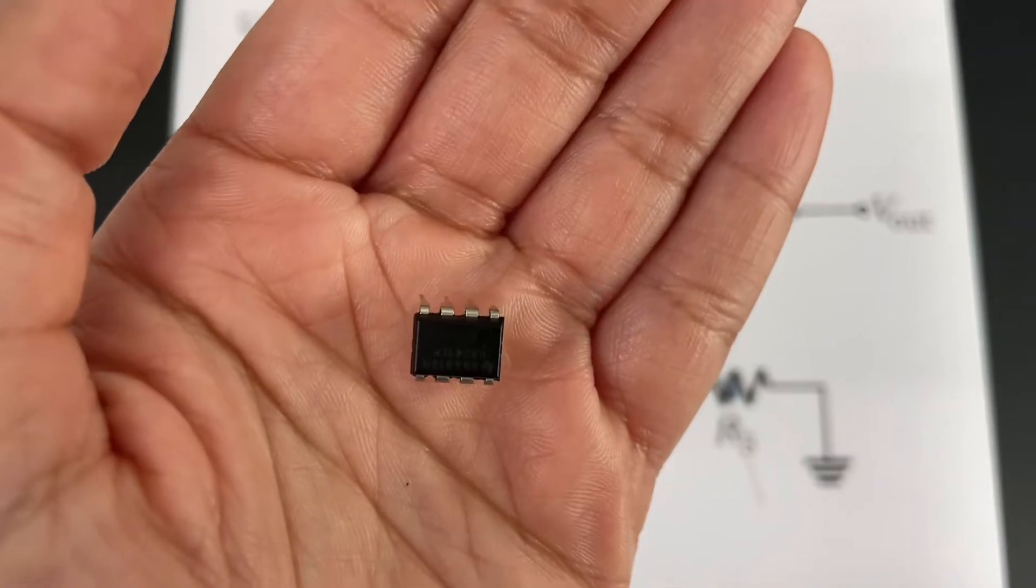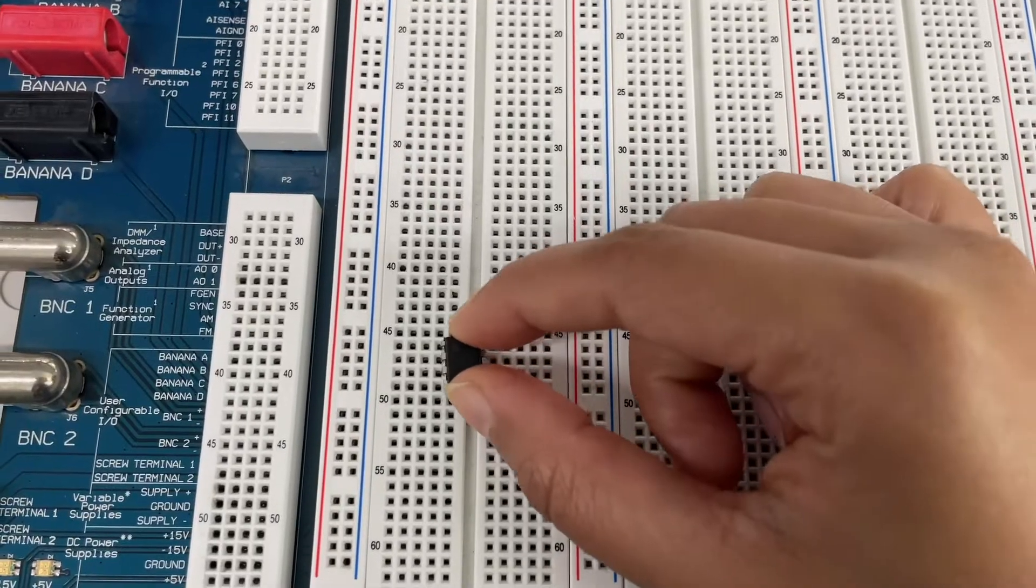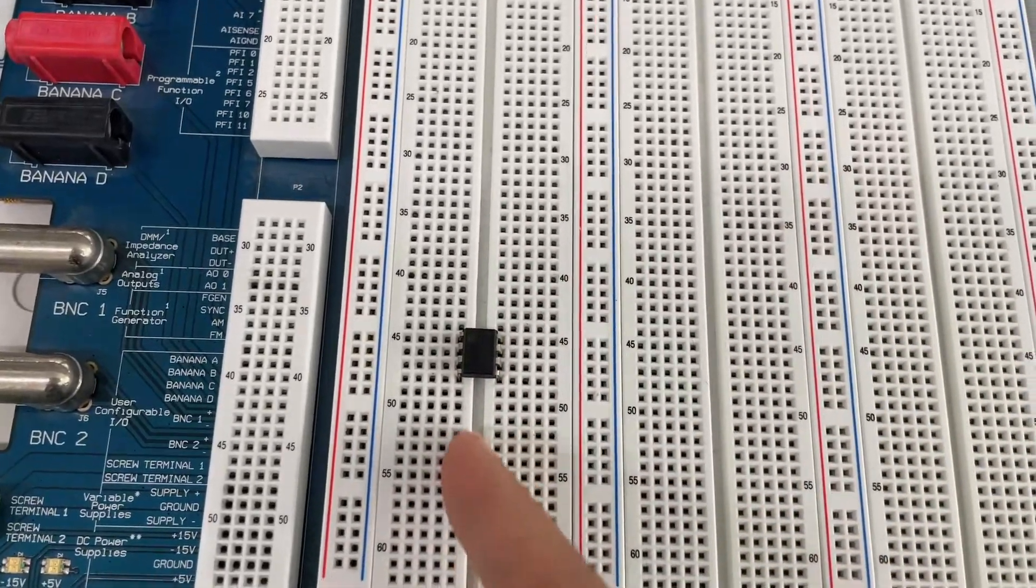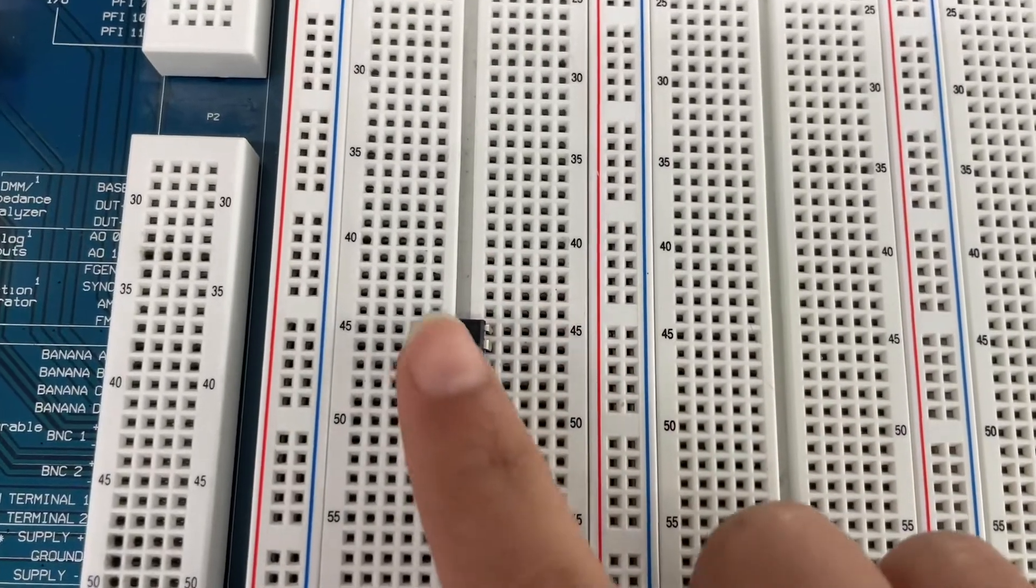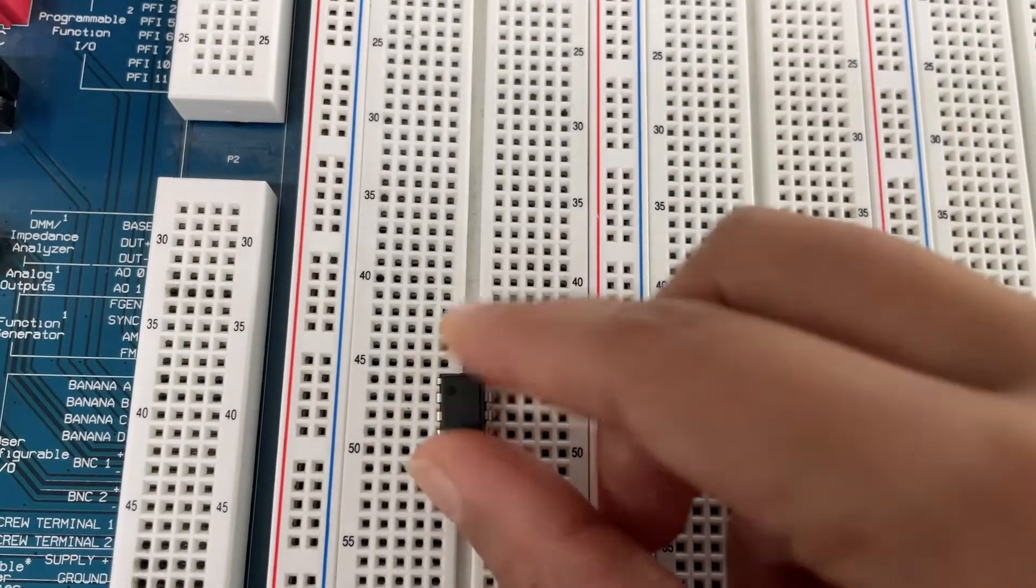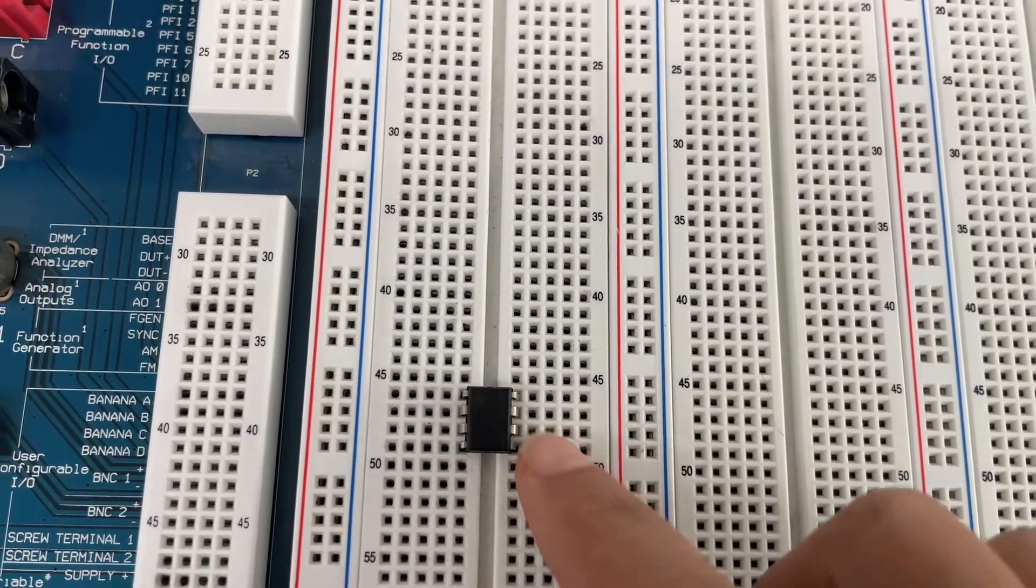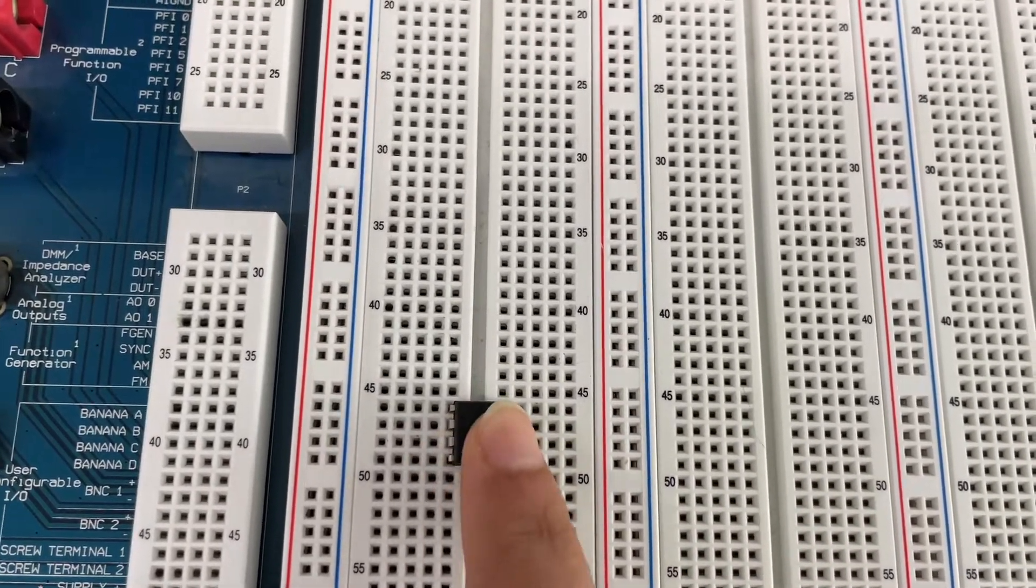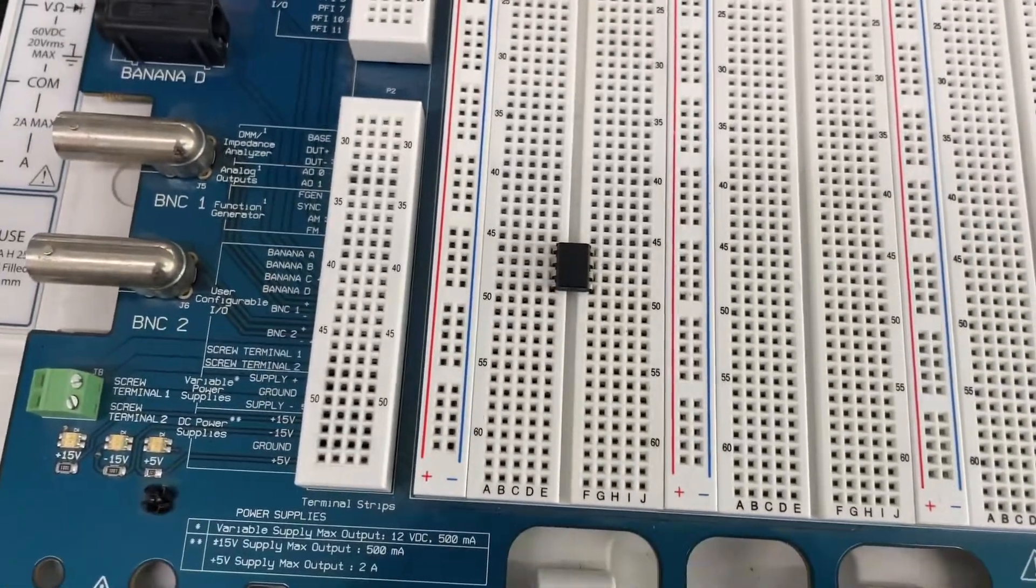Now I'm going to start placing my components. Make sure to place the op amp across this gap so that you don't short the pins. Put one and make sure when you place it don't bend its legs. Place it properly over those slots and then just press gently from one side to the other.